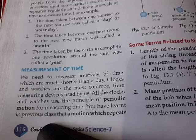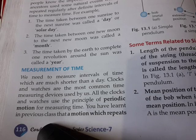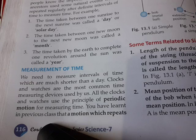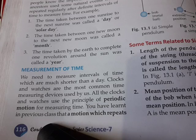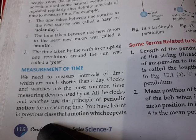Measurement of time — we need to measure intervals of time which are much shorter than a day. The issue was that from one sunrise to the next you call it one day, but if you need to measure a short time within that day, less than a day, then clocks and watches are most beneficial. To measure smaller intervals accurately, all clocks and watches use the principle of periodic motion — motion that repeats itself at regular intervals of time.